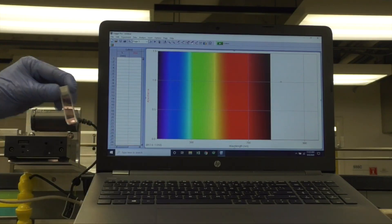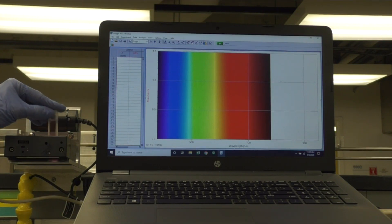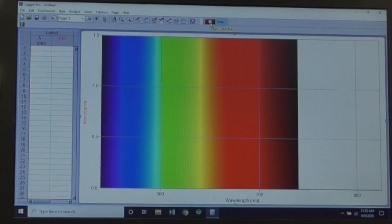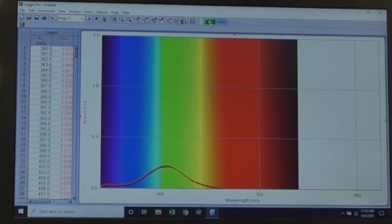Wipe the cuvette, place it in the spectrometer and click Collect. Wait a few seconds and click Stop. Remove the cuvette.